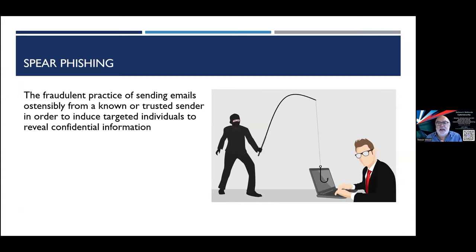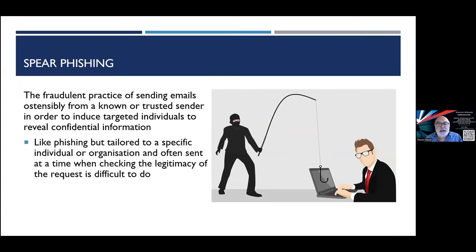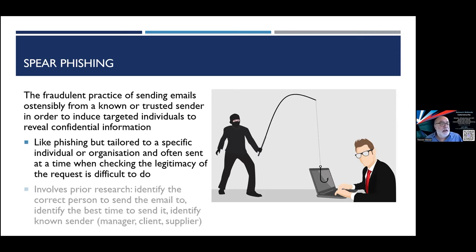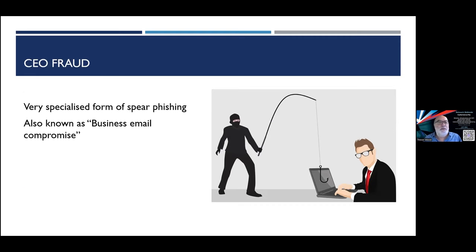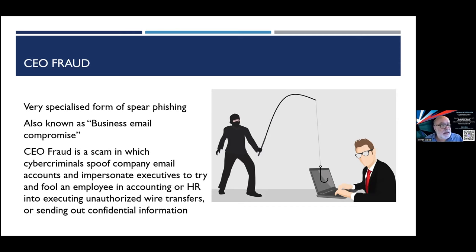The next is spear phishing — much more targeted. Like the overdue invoice example, it's sent to a specific person and often looks very legitimate. It involves a lot of research to identify the right target, but can be worth a lot of money — if you can get someone to pay a quarter of a million pound invoice, all that research time is well worth it. Then there's CEO fraud, also known as business email compromise, where company email accounts are spoofed or hacked to make it look like a senior person is requesting a money transfer or gift vouchers.